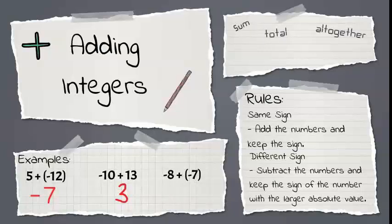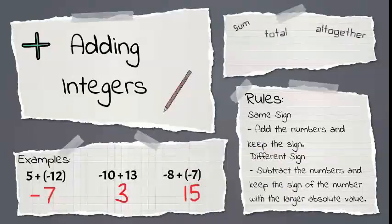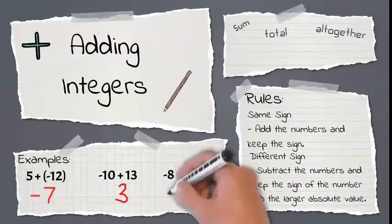The last example says negative 8 plus negative 7. Same sign, so let's add. We get 15, and we want to keep the same sign, which is negative.